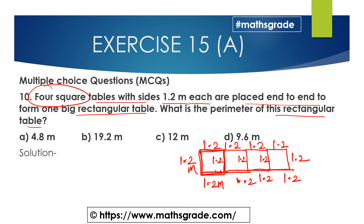The four square tables are placed end to end to form one big rectangle. Now we need to find the perimeter of this rectangular table. First, let's find the perimeter of one square.